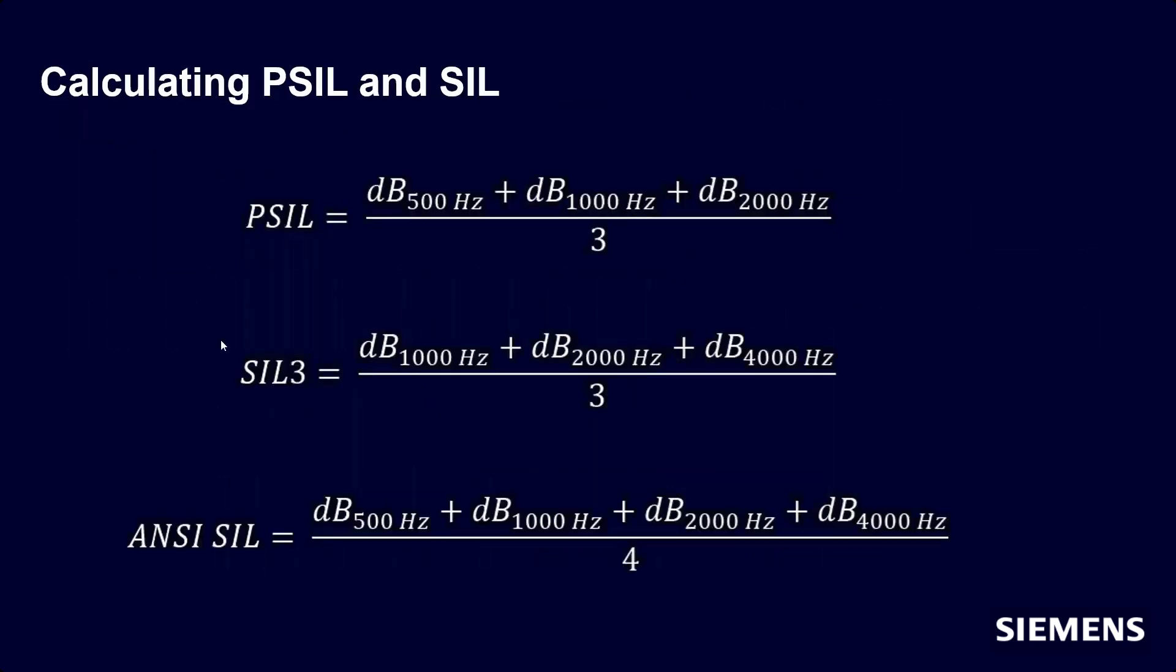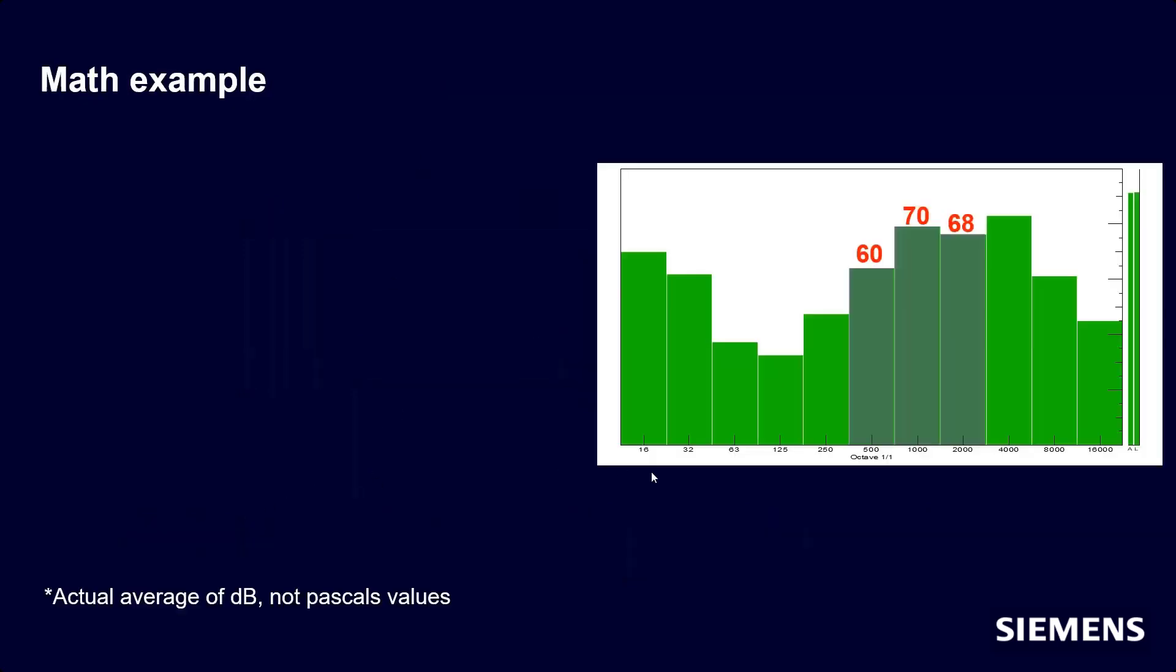So here's the equations. For PSIL, what they're doing is they're taking the dB value at the 500 hertz octave, the dB value at the 1,000 hertz octave, and the dB value at 2,000 hertz octave, divided by 3. SIL 3 is 1,000, 2,000, and 4,000. And then ANSI is basically both of these combined.